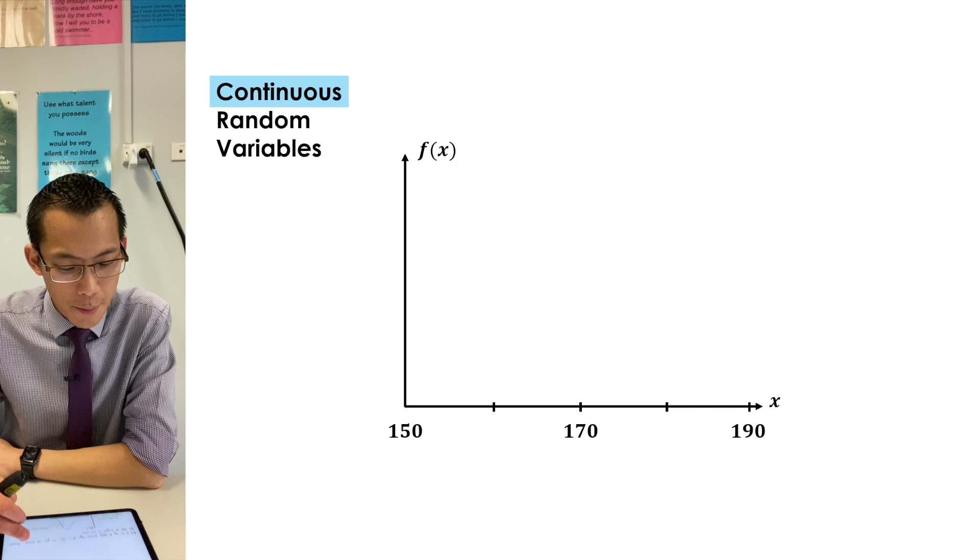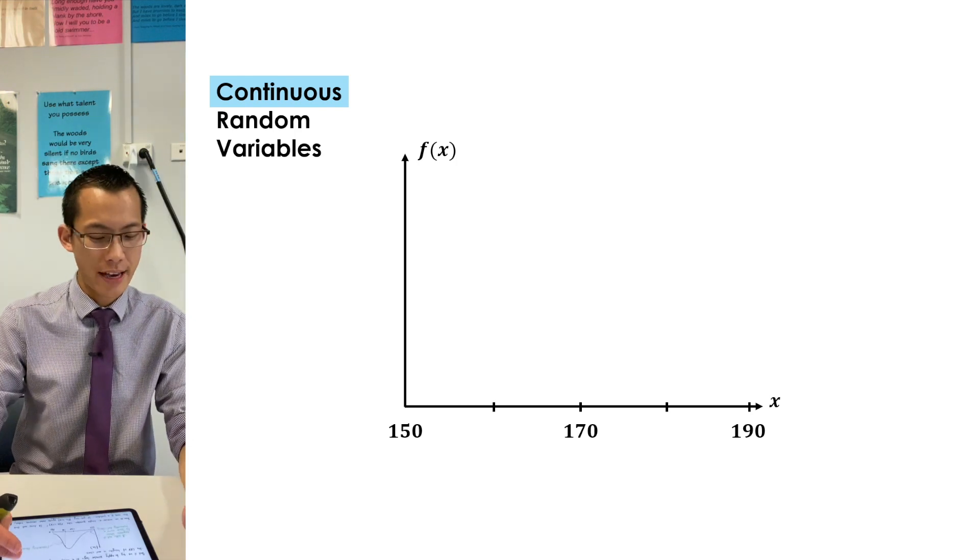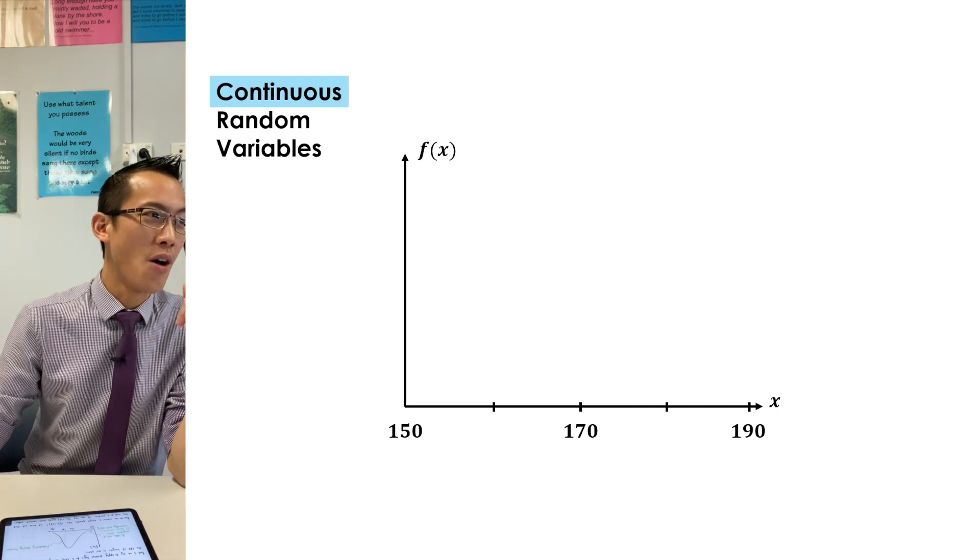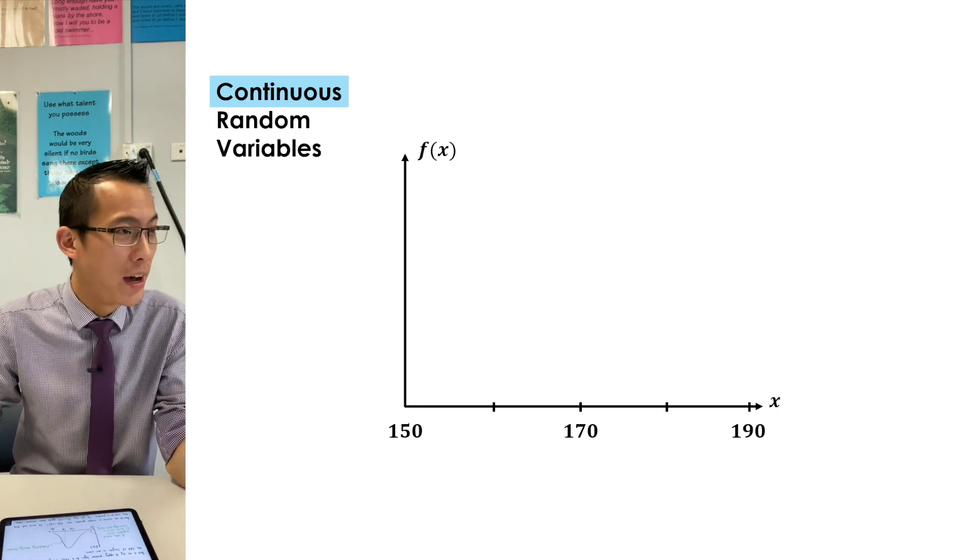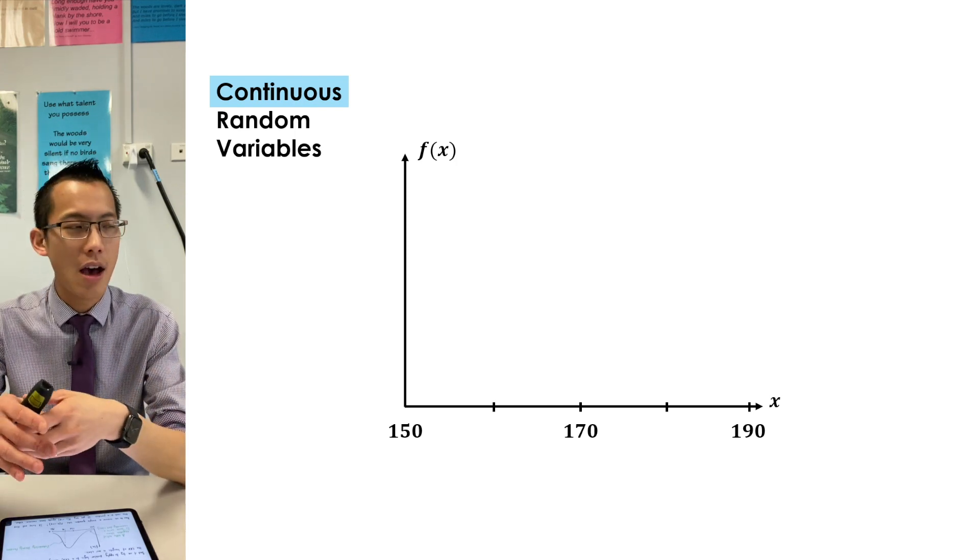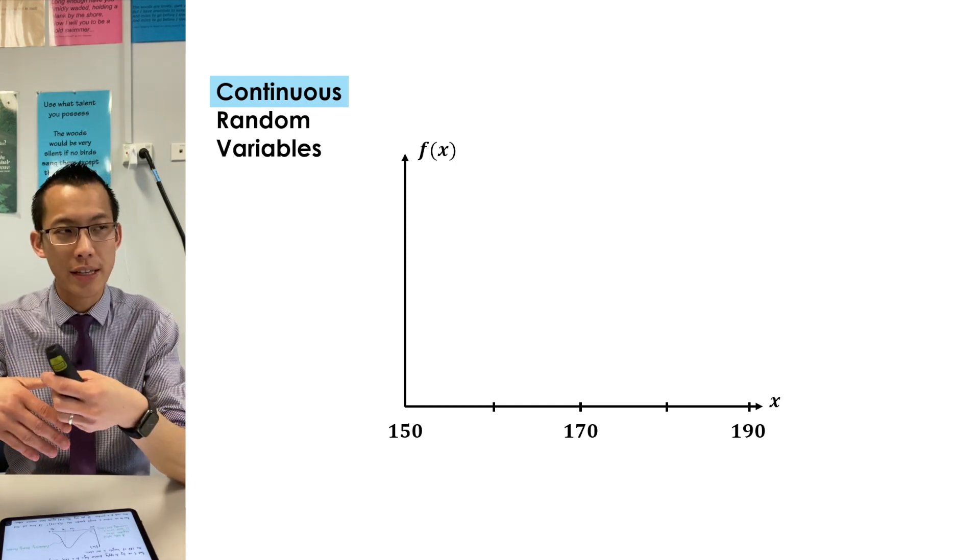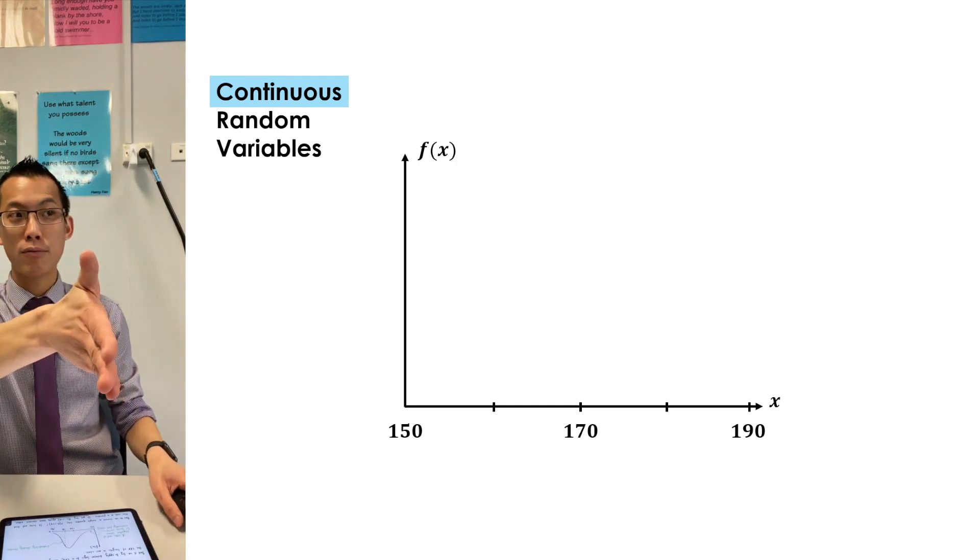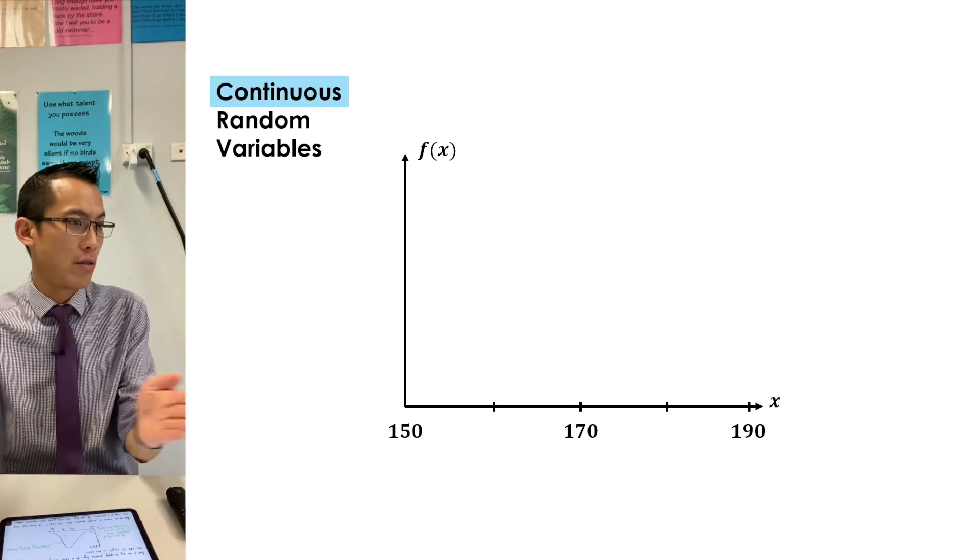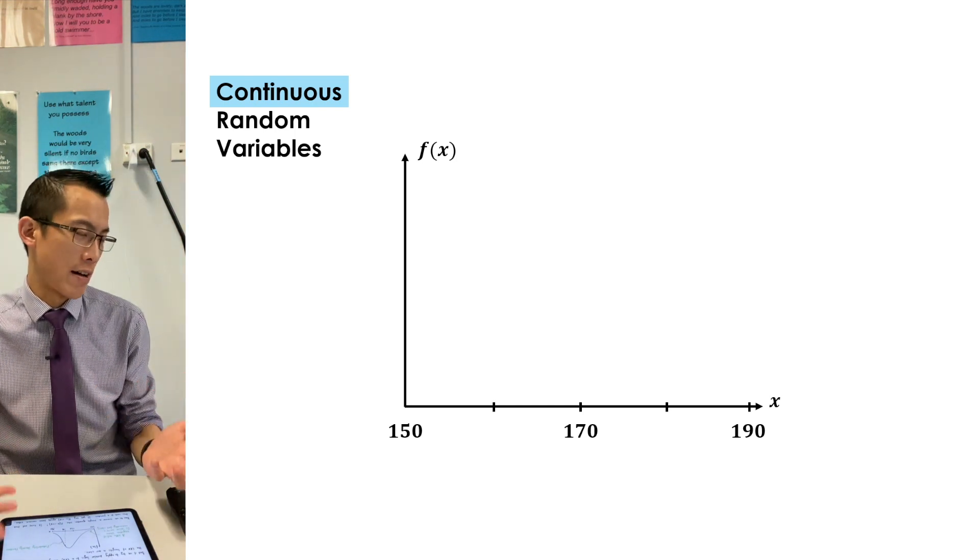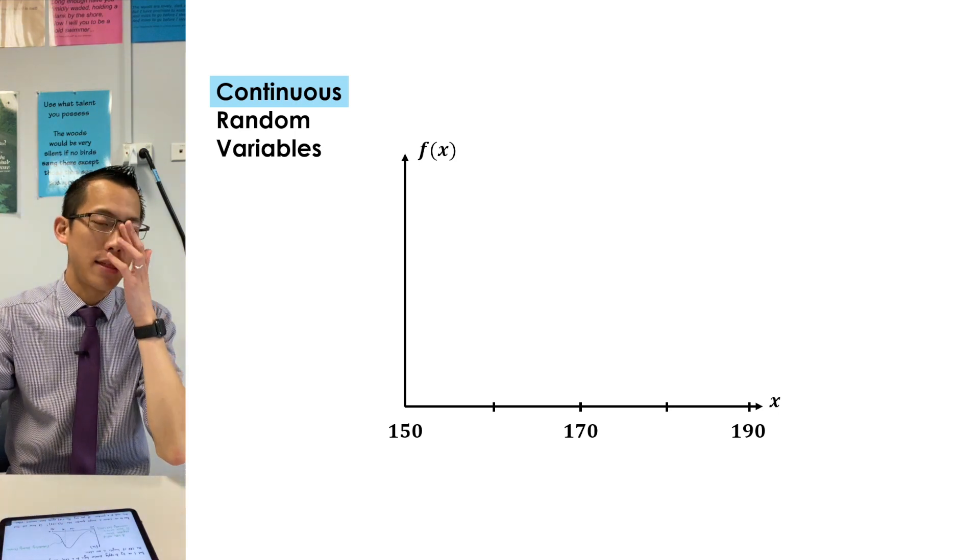Let's suppose, for example, what we wanted to represent was the distribution of heights in this classroom. First question: why is that a continuous random variable? Answer: height is something that you measure, it's not something you count. You could be anywhere between, say, 160 centimeters and 170 centimeters—it's not like you can only be 161 or only 162, you can take any value in between. So this is what we mean by there's a continuum, it's a continuous random variable.